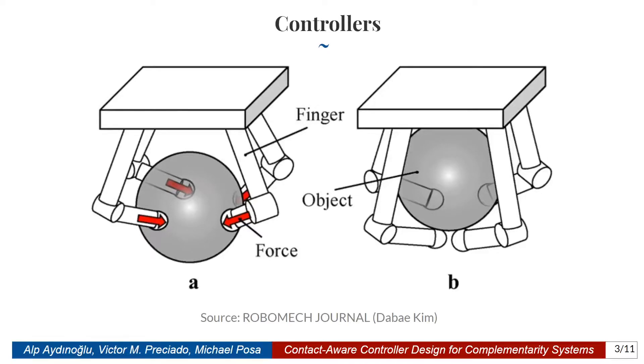Multi-contact systems make and break contact with the environment, and we think of them as hybrid systems. For clarity, we present a simple figure. Observe that depending on which fingers are touching the object, the system has different dynamics. All different configurations, depending on which fingers are touching the object, are called different modes.